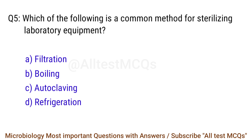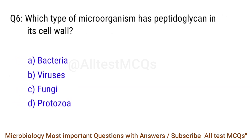Q5. Which of the following is a common method for sterilizing laboratory equipment? The right answer is option C: Autoclaving. Q6. Which type of microorganism has peptidoglycan in its cell wall? The right answer is option A: Bacteria.